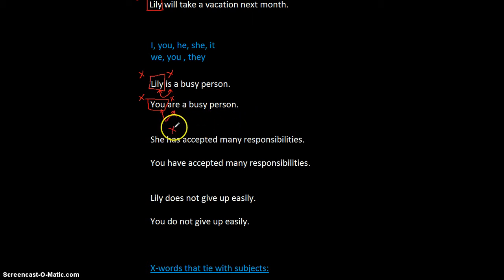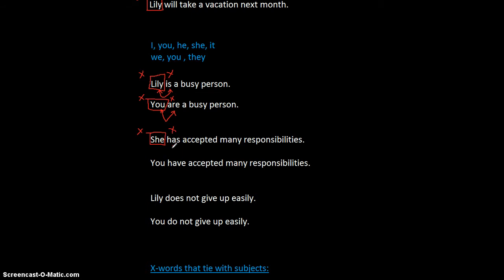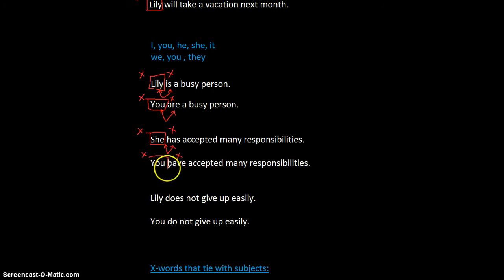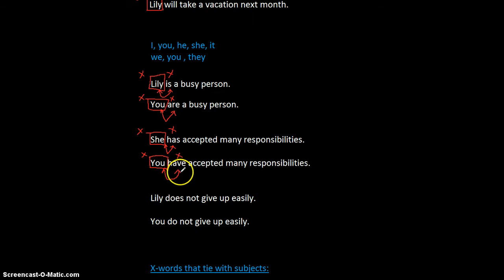'She has accepted many responsibilities.' Has she accepted many responsibilities? She is the subject; 'has' is the x-word. Has ties with the subject 'she.' I can prove it by changing the subject to 'you': 'Have you accepted?' When I change the subject from she to you, I also change the x-word from 'has' to 'have.' So the x-word 'have' ties with the subject 'you.'